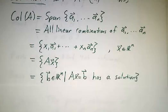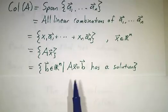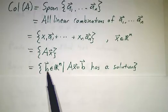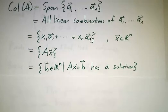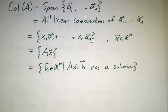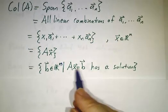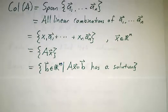Or to put it another way, it's all vectors B in Rn such that you can find a solution to Ax equals B.